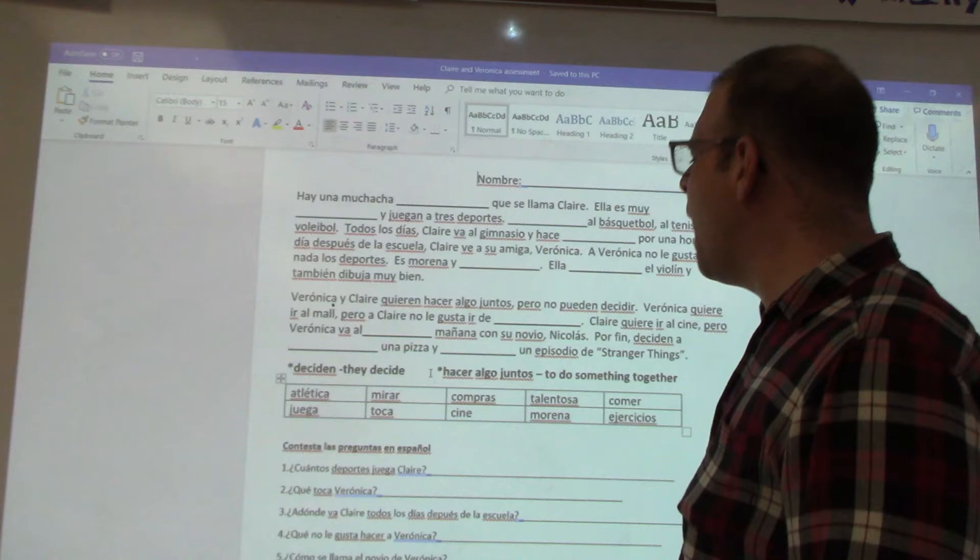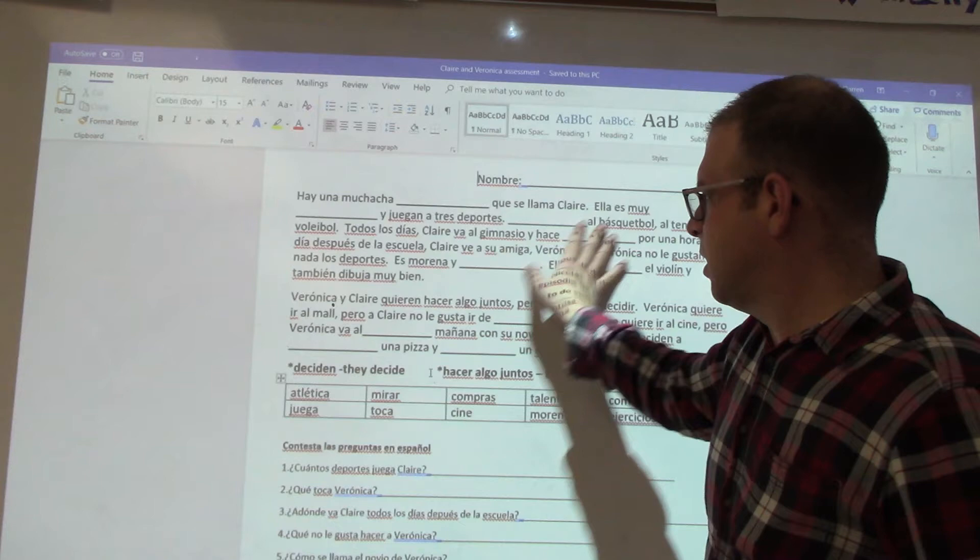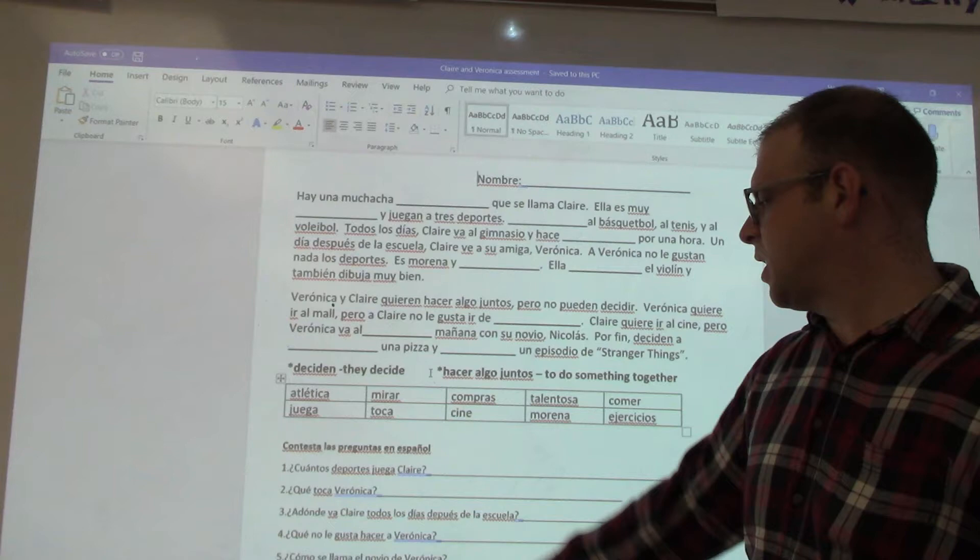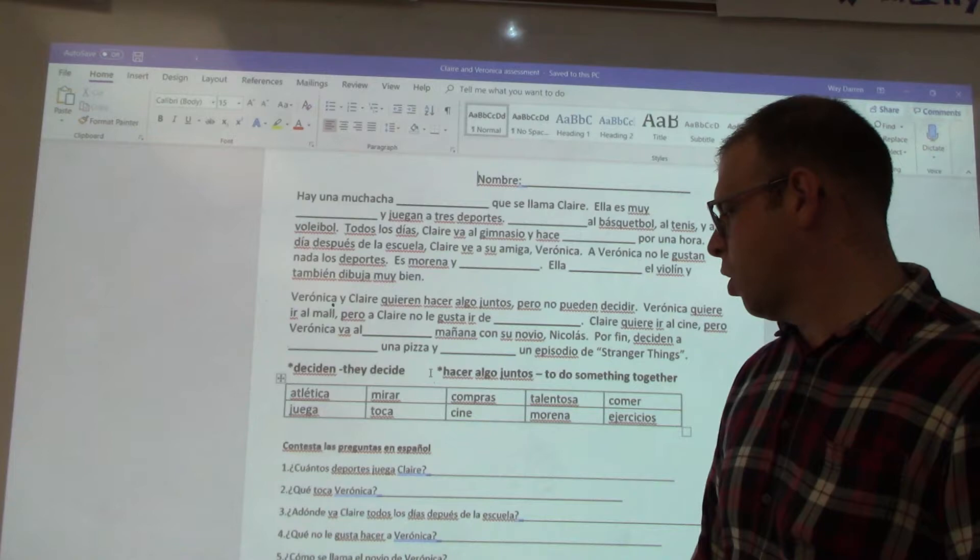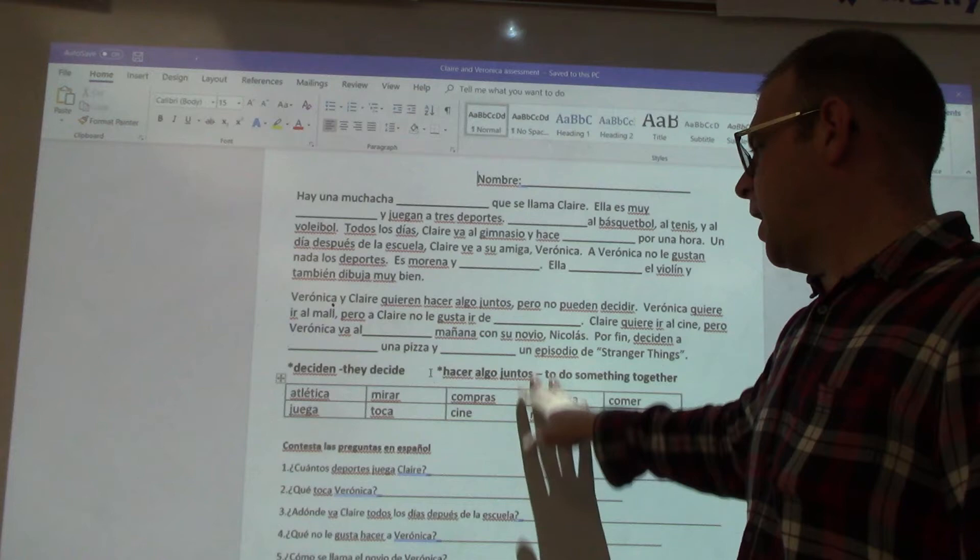So here's a story after I tell that story for what, 20 minutes, right? Then I give different little assessments. Here's the story, here's the paragraph with words taken out, and then I put a word bank down below. Then answer some questions in Spanish. You know, how many sports does Claire play? What does Veronica play? What instrument? Where's Claire go every day after school? What doesn't Veronica like to do?